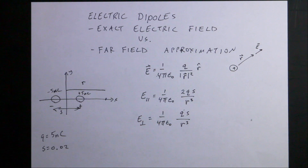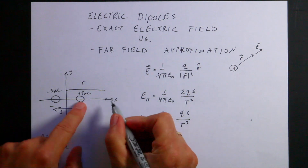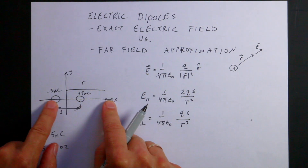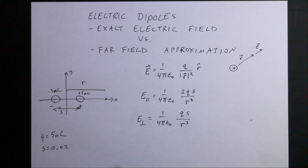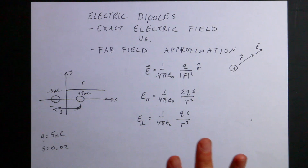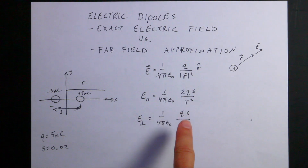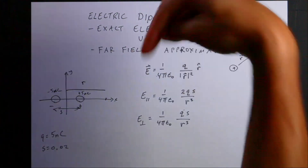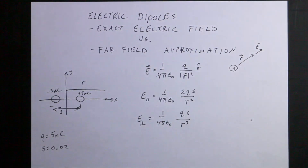There are actually two ways to calculate the electric field due to a dipole. The first is the exact way: calculate the electric field due to the positive charge, then the electric field due to the negative charge, and add them up. The other way is to make approximations for the case where you're far away from the dipole. I'll link the derivation videos down below.